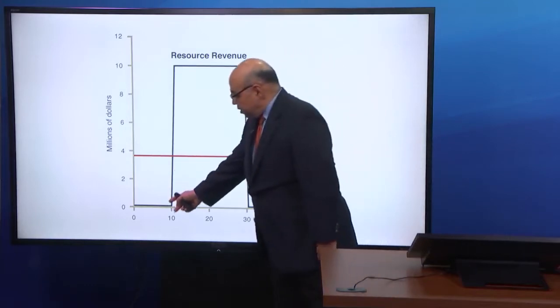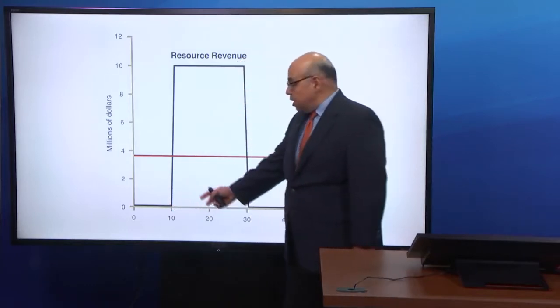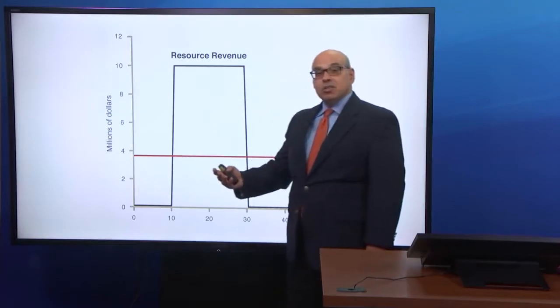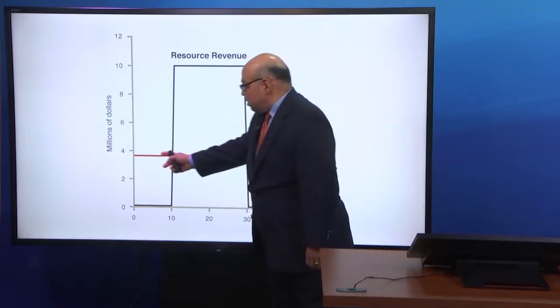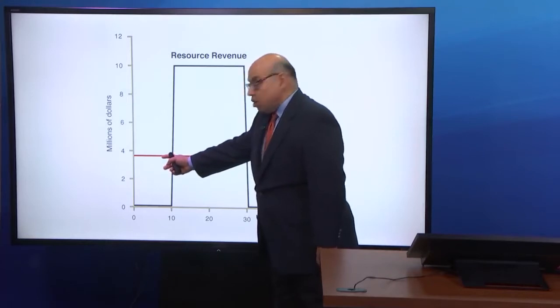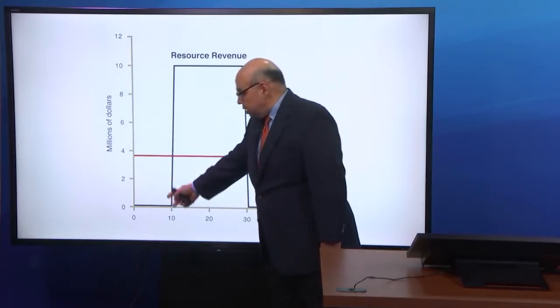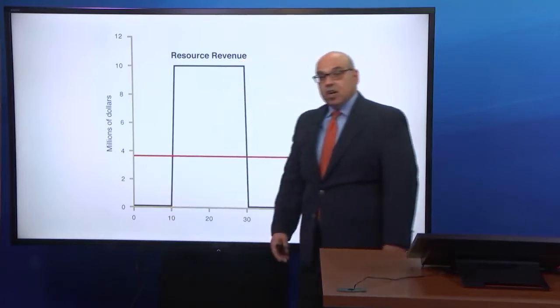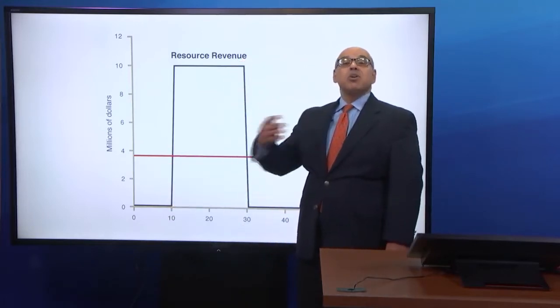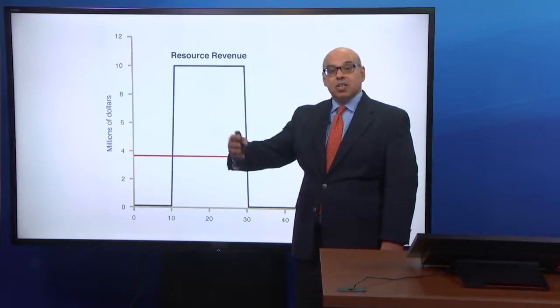So during this period, when there's no production, government has to borrow because they have no resource revenue. So the red line over this period shows this is a spending of resource revenue that exceeds resource revenue because it's zero. So during this period, government is actually disaving. It's borrowing. It goes to financial markets to borrow.